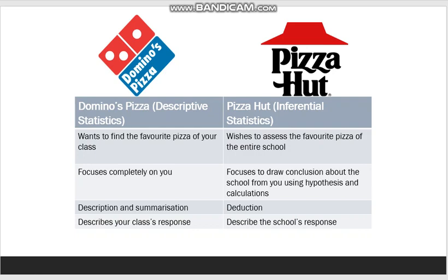They are using a hypothesis — for example, that this particular school loves cheese pizza — which is something that can be proved or disproved. The Pizza Hut guys have their notepads out and are making complex calculations and deductions, wishing to understand the response of the entire school from your sample. Domino's starts with a D and so does descriptive — hence, Domino's represents descriptive statistics, while Pizza Hut represents inferential statistics.